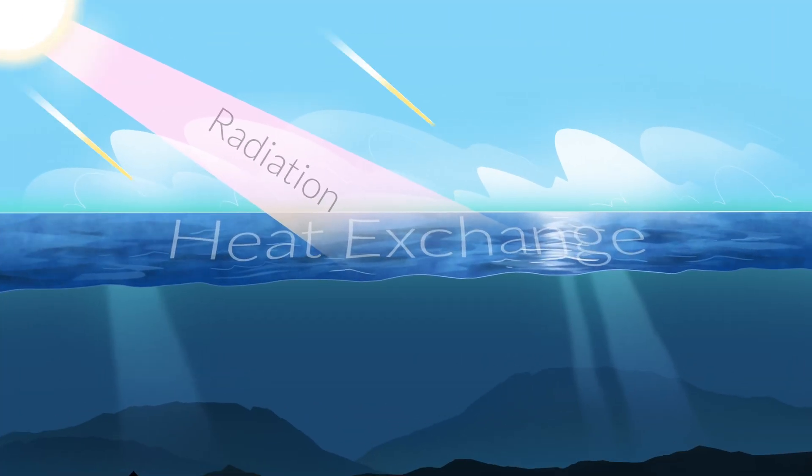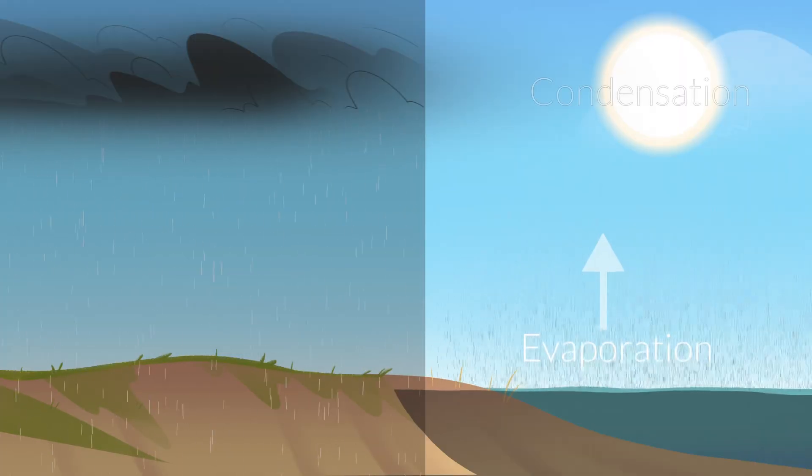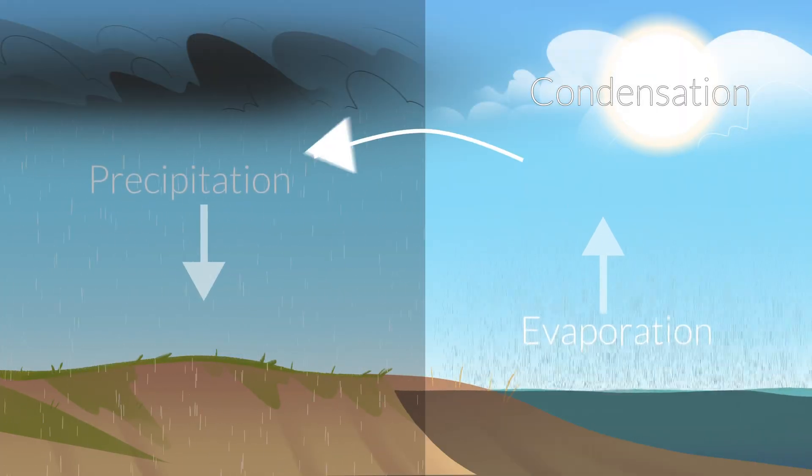The ocean absorbs most of the sun's radiation, exchanging heat with the atmosphere and driving the global water cycle. Water from the ocean evaporates and then condenses to form clouds.